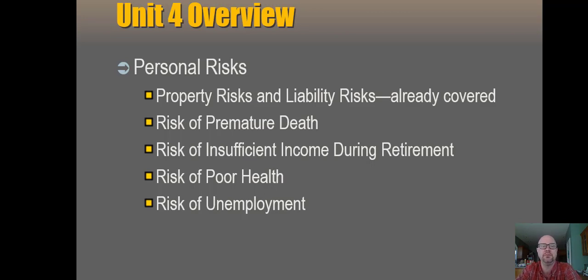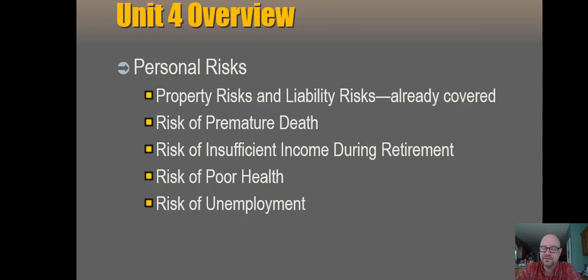Now we've got to talk about these remaining personal risks. We've got the risk of premature death — that's got a very specific economic definition that we'll talk about in just a second. Life insurance is the tool we use to handle that possibility. We're worried about: if something happens to me, financially that's a problem for anybody who relies on my income. That's what life insurance is intended to do — replace my lost income. That's the biggest use of life insurance, and there are others we'll talk about.